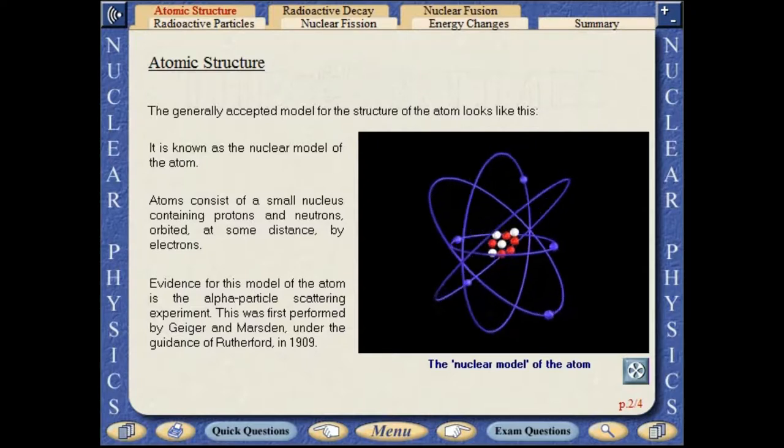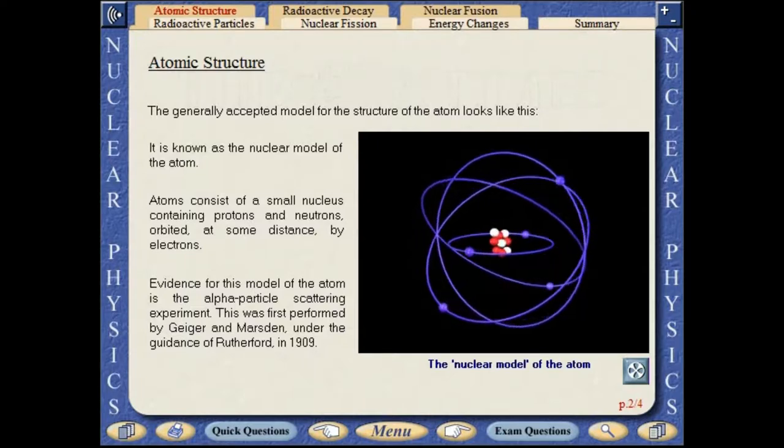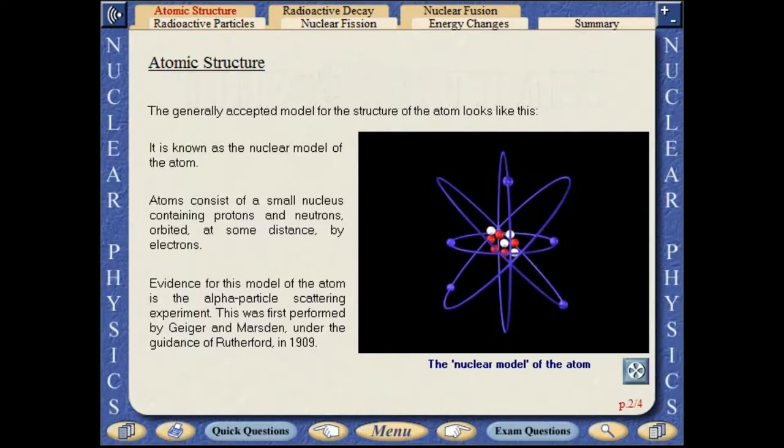Evidence for this model of the atom is provided by the Alpha Particle Scattering Experiment, which was first performed by Geiger and Marsden under the guidance of Rutherford in 1909.